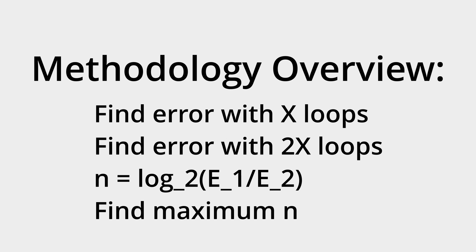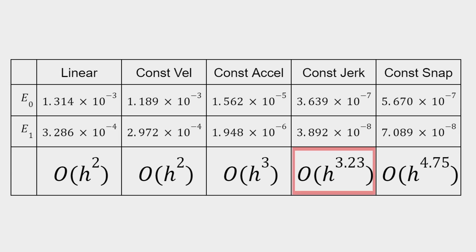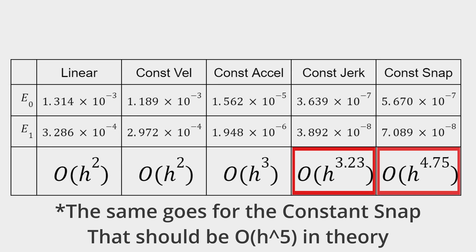Unfortunately, a detailed overview of the testing methodology would take too long, but the basics are that I would find the error with a certain number of loops, then double it, and see what the ratio of these values of error converge to. I also think that the value of constant jerk being O of H to the 3.225 is due to deficiencies with how I tested it. In theory, it should be O of H to the 4th accurate.